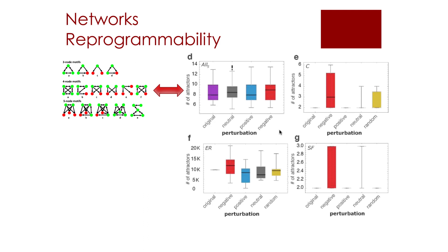From the random boolean networks experiments, we were able to produce the results shown in figure D. The small difference between cases is very small but significant, because the number of attractors is tightly bounded; given the number of cases, the average difference is consistent with what was also found on larger networks. For example, in figures E, F and G, we have numerical calculations of the change in number of attractors in simple directed complete graphs, Erdos-Renyi, and scale-free boolean networks, and they show very consistent results.